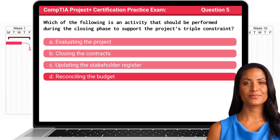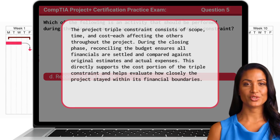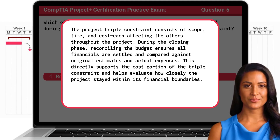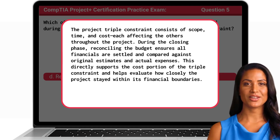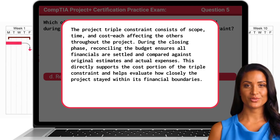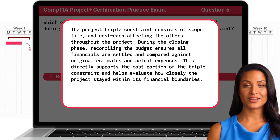The answer is D: Reconciling the budget. The project triple constraint consists of scope, time, and cost, each affecting the others throughout the project. During the closing phase, reconciling the budget ensures all financials are settled and compared against original estimates and actual expenses. This directly supports the cost portion of the triple constraint and helps evaluate how closely the project stayed within its financial boundaries.